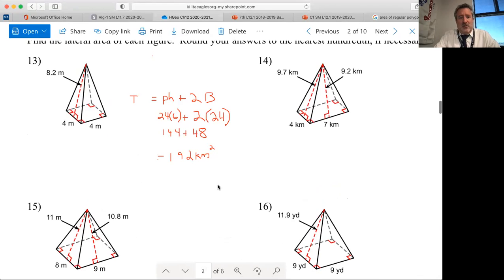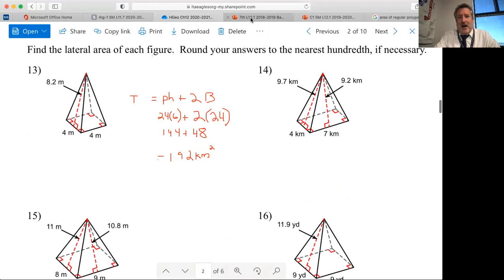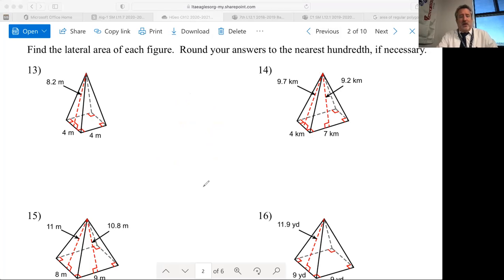And what they pointed out was the fact that on the lateral area of the pyramids, two of those shapes are not regular polygons on the bases. Notice 13 and 16 I have squares, but 14 and 15 they're not squares, they're rectangles.